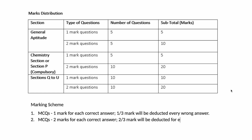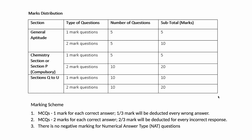There is negative marking, so do not take it lightly. For MCQs, you get one mark for each correct answer and one-third is deducted for a wrong answer. For two-mark MCQs, you get two marks for the correct answer and two-thirds is deducted for an incorrect response. However, for numerical answer type (NAT) questions, there is no negative marking — that is an advantage. They can be mastered with practice.